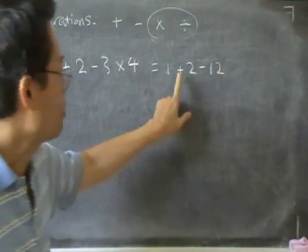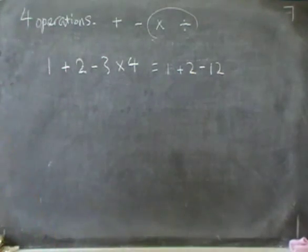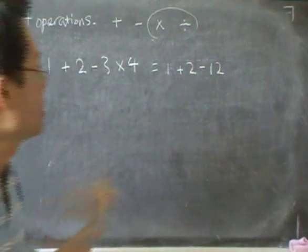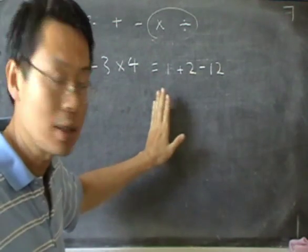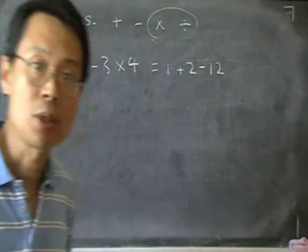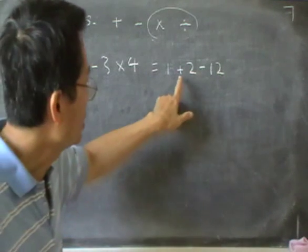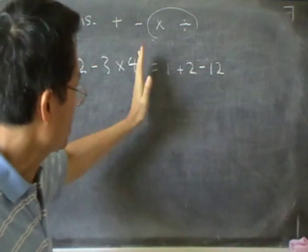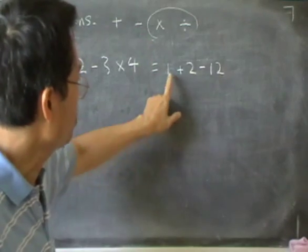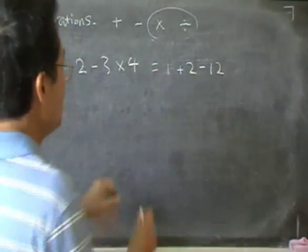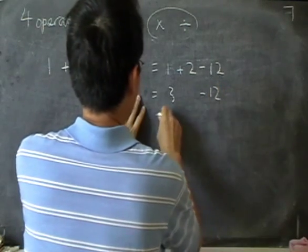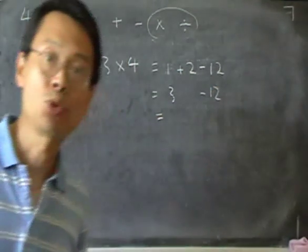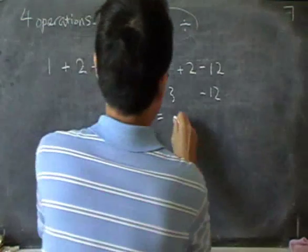And now you're left with the plus and minus. Then you can do it starting from the left side and work to the right side. That means you do the 1 on the right first. Starting from the left, you do 1 + 2, that's 3, minus 12, and then you do 3 - 12, that's -9.